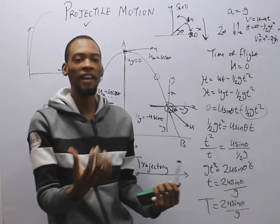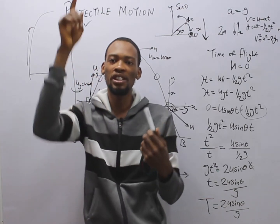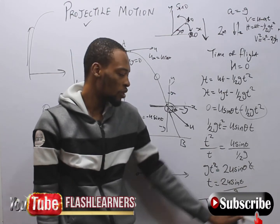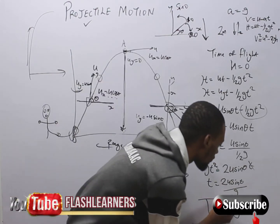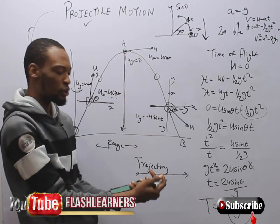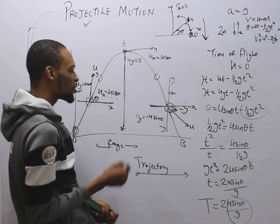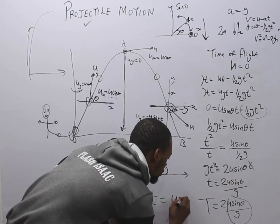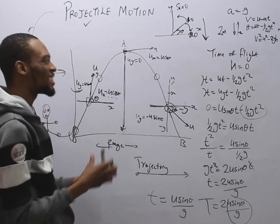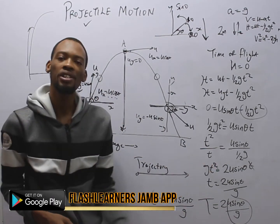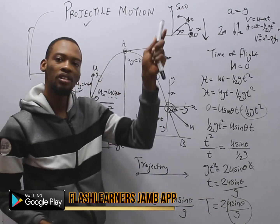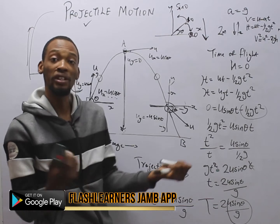The factor of 2 in the time of flight formula is because the time of flight covers the time to reach maximum height and the time to come back down — two equal halves. Therefore, the time to reach maximum height is t = u sin θ / g.